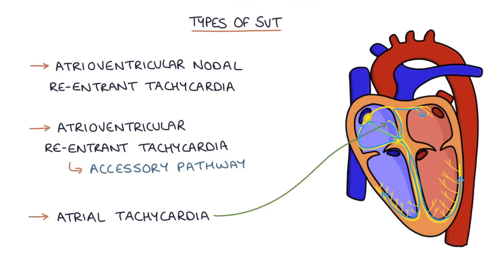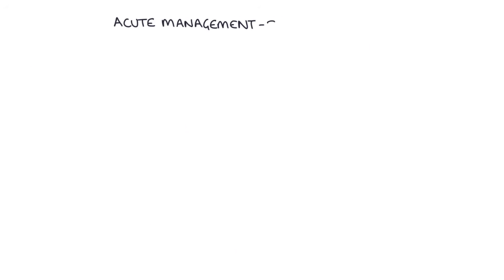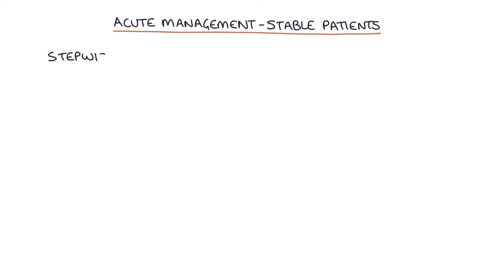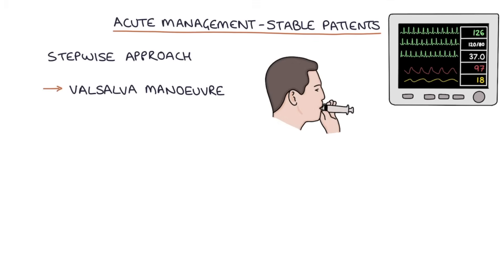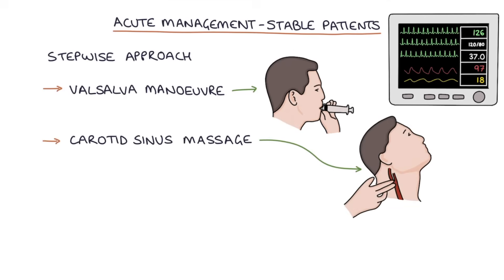This ectopic electrical activity causes an atrial rate above 100 beats per minute. For the acute management of stable patients with SVT, we take a stepwise approach, trying each step before moving to the next. The patient should be on continuous ECG monitoring. The first step is the Valsalva manoeuvre — asking the patient to blow hard against resistance, for example into a plastic syringe. The next step is carotid sinus massage, gently massaging the carotid on one side with two fingers. Often these simple measures without medication will be enough to convert the patient back to sinus rhythm.